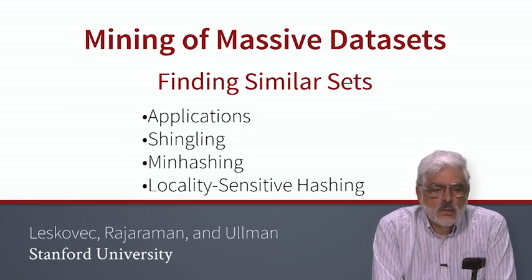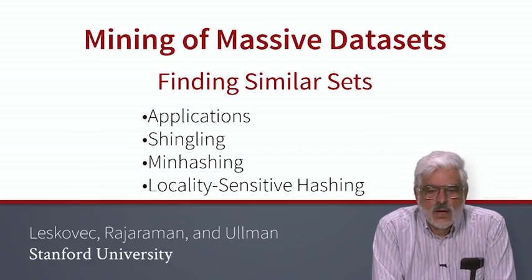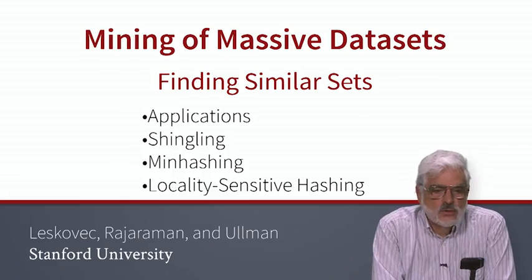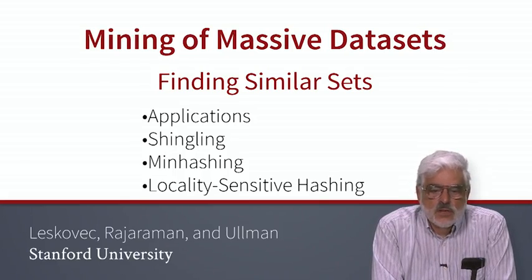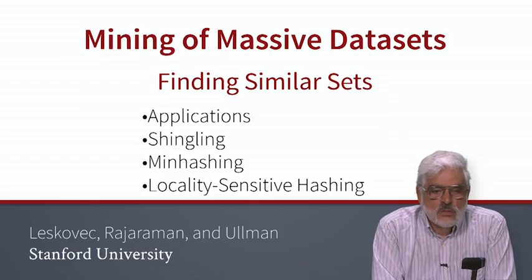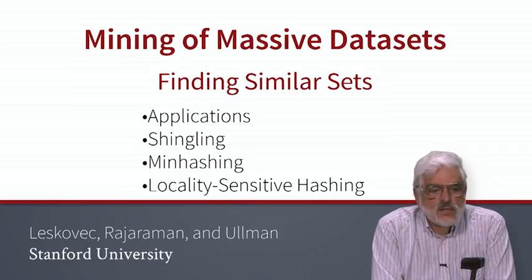There is a fundamental problem of scale. If we have even a million sets — not a large number compared with the number of web pages or Amazon users — the number of pairs of sets is half a trillion. We don't have the resources to compare them all, so we need some magic to focus us on the pairs that are likely to be highly similar, never looking at the vast majority of pairs.